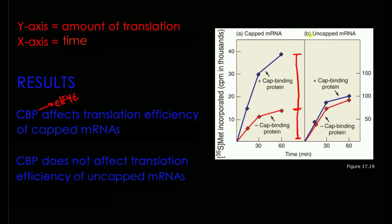When we look at the uncapped mRNA condition, we still see translation occurring — and actually very high levels compared to the capped condition. This may be due to the kind of mRNA used: encephalomyocarditis versus Sindbis, one being translated at a higher rate. What's really important to note is that there is no difference between the amount of translation when we have the cap binding protein and when we don't. So EIF4E does not affect the translation efficiency of uncapped mRNA.